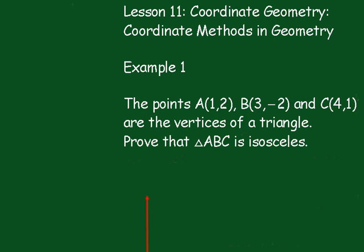Lesson 11: Coordinate Geometry. Coordinate Methods in Geometry. Example 1. The points A(1,2), B(3,-2), and C(4,1) are the vertices of a triangle. Prove that triangle ABC is isosceles.